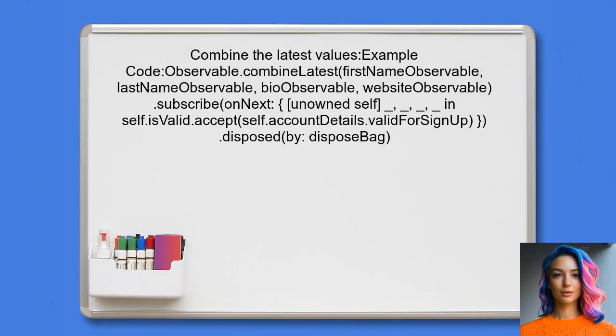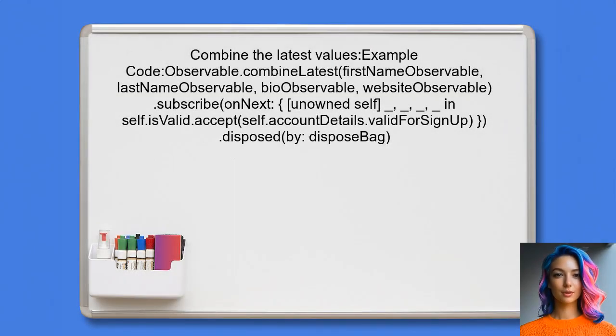This ensures that the second subscription waits for the first one to complete before executing. Finally, the user can combine the latest values from all observables. This will ensure that the valid for signup property is only evaluated after all necessary account details have been set.